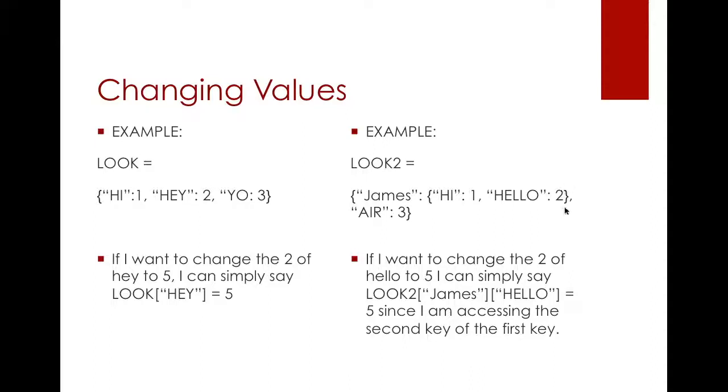Let's say I want to change the 2 of hello to 5. All you have to do is say look2 of James, square brackets hello, since you are basically accessing the first key, and then you set it equal to 5. You're accessing two keys simultaneously. You first access James which gives you access to the entire dictionary of James, and then you access hello which is a key within that nested dictionary.